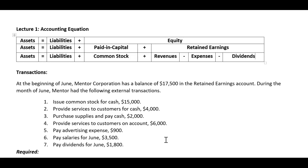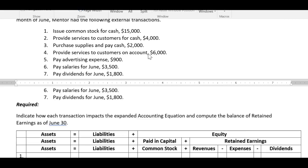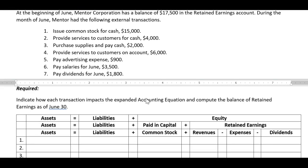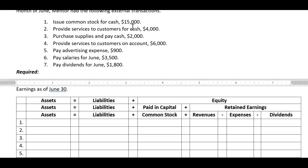Now, how do we use this? Remember, everything that impacts this equation must be recorded and reported. Step one in the accounting cycle is always to look at the business transaction and ask yourself: based on this transaction, how was the accounting equation impacted? Let's look at a few transactions. Mentor Corporation has a balance of $17,500 in the retained earnings account. During the month of June, Mentor had the following external transactions. We're not looking for balances here — I just want to look at each transaction and see how it impacts the accounting equation.